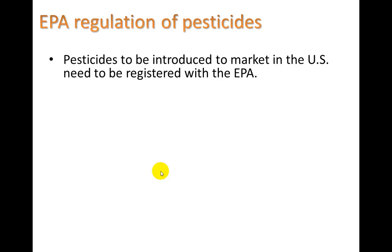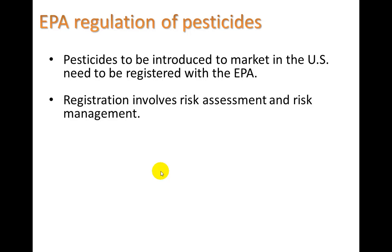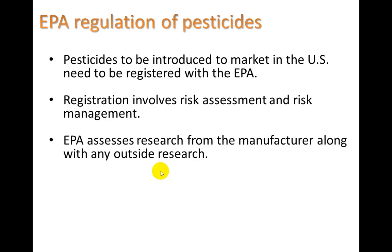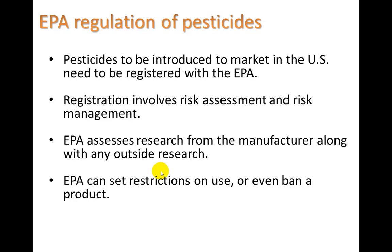Pesticides introduced to the market must be registered with the EPA — you can't just spray anything. Registration involves both risk assessment and risk management: assessing how much risk exists, and deciding how much of the substance will be allowed, in what concentrations, and under what conditions. The EPA assesses research from the manufacturer as well as outside research, though manufacturers' research is likely biased since they want their product to reach the marketplace. The EPA can set restrictions on use or even ban a product.